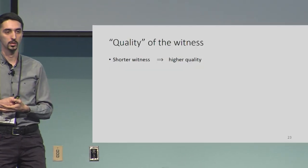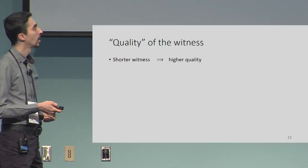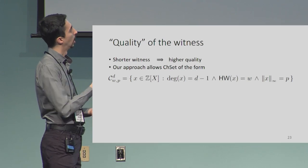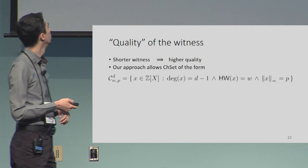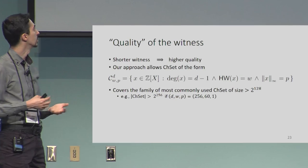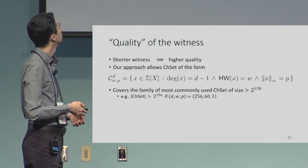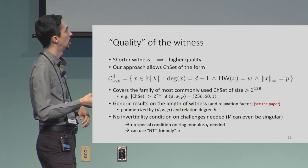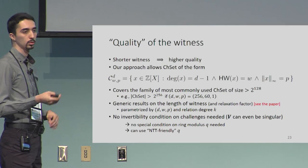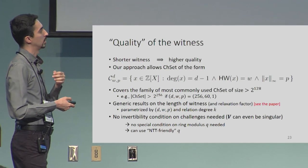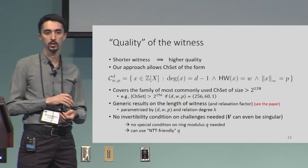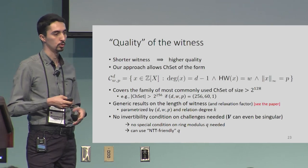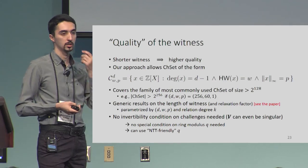We also need to assess witness quality — how short the extracted witness is. We can support challenge sets of a form with degree at most D or D-1, some Hamming weight, and some infinity norm. In particular, you can make the challenge set size 2^256 by setting these parameters, meaning the proof is one-shot. The good thing is that we do not need any invertibility condition on the challenges, so the Vandermonde matrix can even be singular, and you can use an NTT-friendly modulus Q.